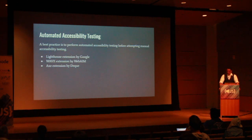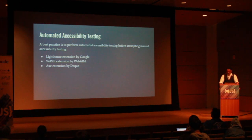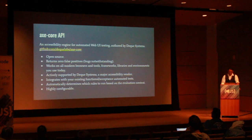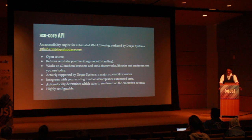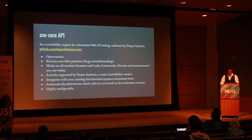Using accessibility testing extensions is a great idea as long as you remember to do it. But you shouldn't be thinking about accessibility after the fact, just like you shouldn't think about usability, responsive design, security, or performance at the end of your development. Deque released Axe Core, which is the application that runs their accessibility testing extension. It's open source, works on all modern browsers and tools, actively supported, integrates with your existing functional acceptance automated tests, and it's highly configurable.